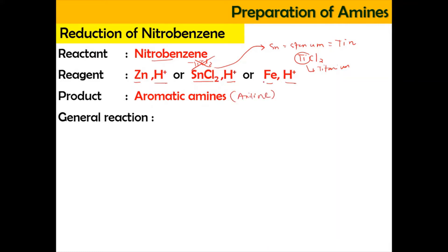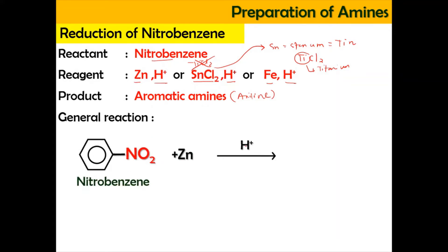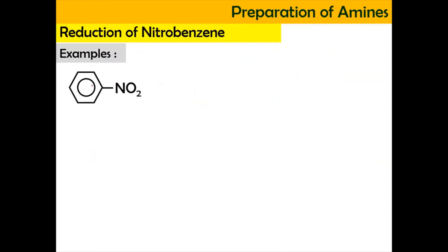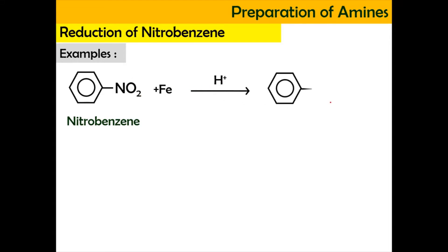For the general reaction: if you have nitrobenzene and react it with zinc in acidic condition, you're going to produce aniline. Another example — if you use a different reducing agent, such as iron in acidic condition, nitrobenzene is going to be reduced into NH2, which is aniline.